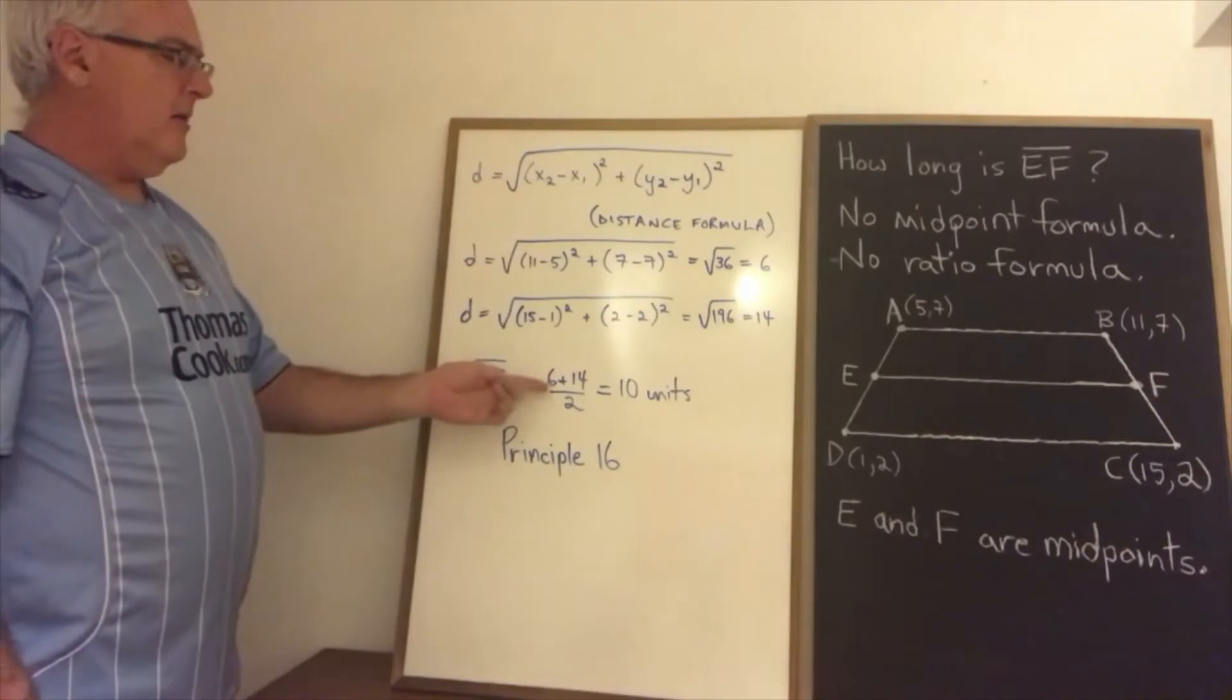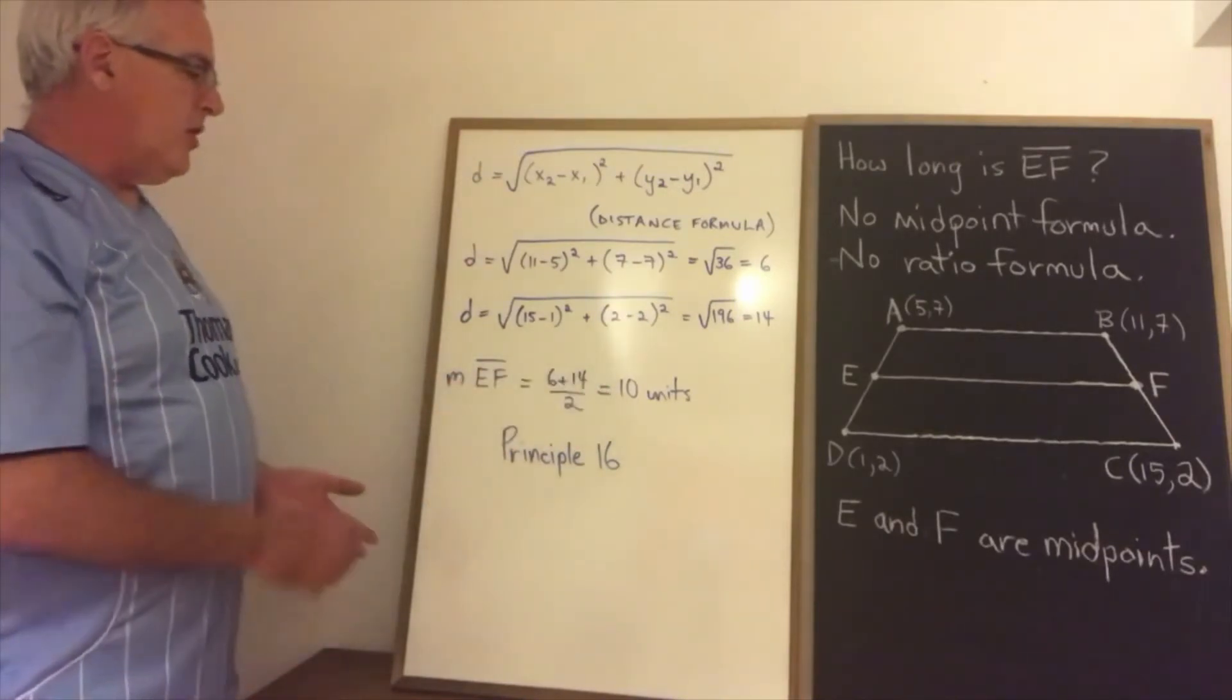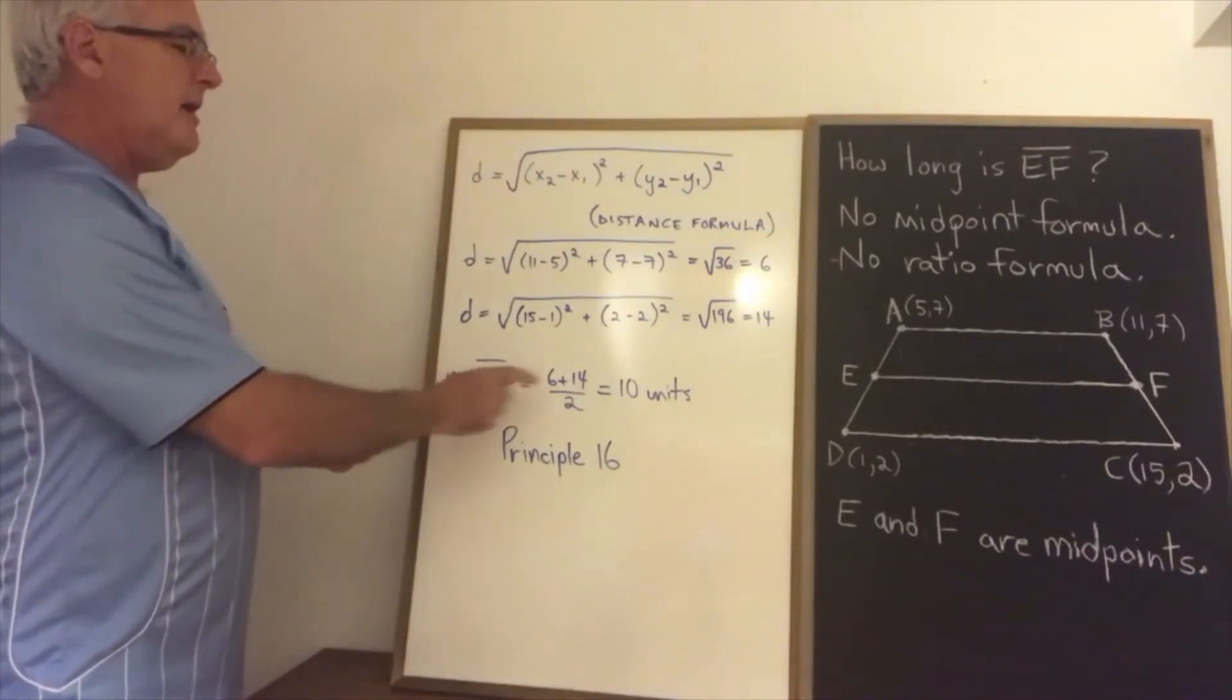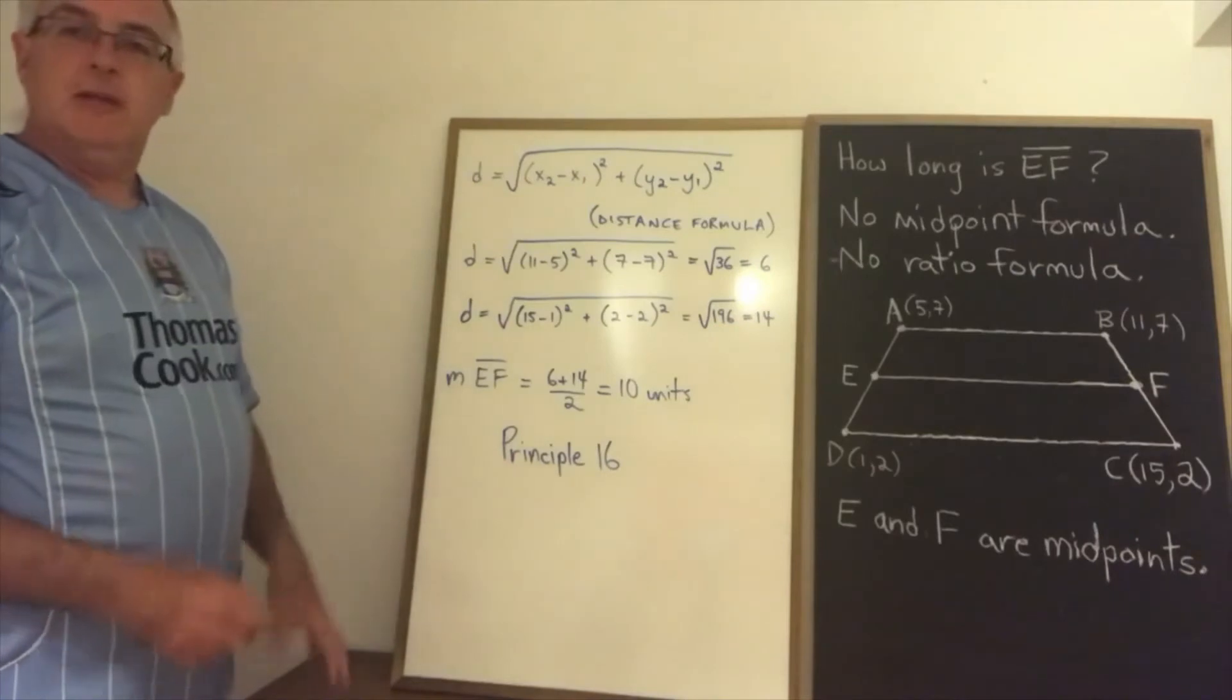Then I'm adding those two lengths together and dividing by 2 and determining that the length of segment EF is 10 units. How am I doing that? I'm using principle 16.